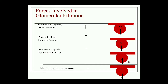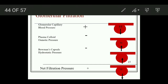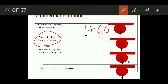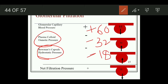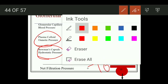As depicted in the diagram: glomerular capillary hydrostatic pressure is about 60 mmHg, favoring filtration with a plus sign; glomerular capillary colloid osmotic pressure opposes filtration at minus 32 mmHg; Bowman's capsule hydrostatic pressure also opposes filtration at minus 18 mmHg; giving a total net filtration pressure of 10 mmHg.